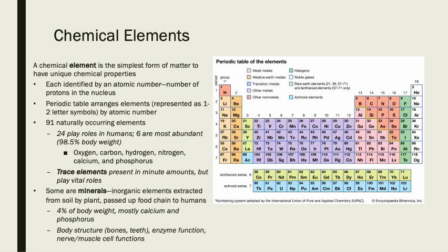There are 24 elements that are important in our body out of the 91 natural elements. Six of them are very abundant and essential: oxygen, carbon, hydrogen, nitrogen, calcium, and phosphorus. They make up about 98% of our body weight altogether. Trace elements are tiny elements with very little trace in our body, but they are also important. We also have minerals or inorganic elements that we get from soil, plants, and food. These make up 4% of our body weight, mainly consisting of calcium and phosphorus. Body structures such as bones and teeth rely on calcium, enzyme function relies on important minerals, and nerves and muscle functions also rely on some of these elements.